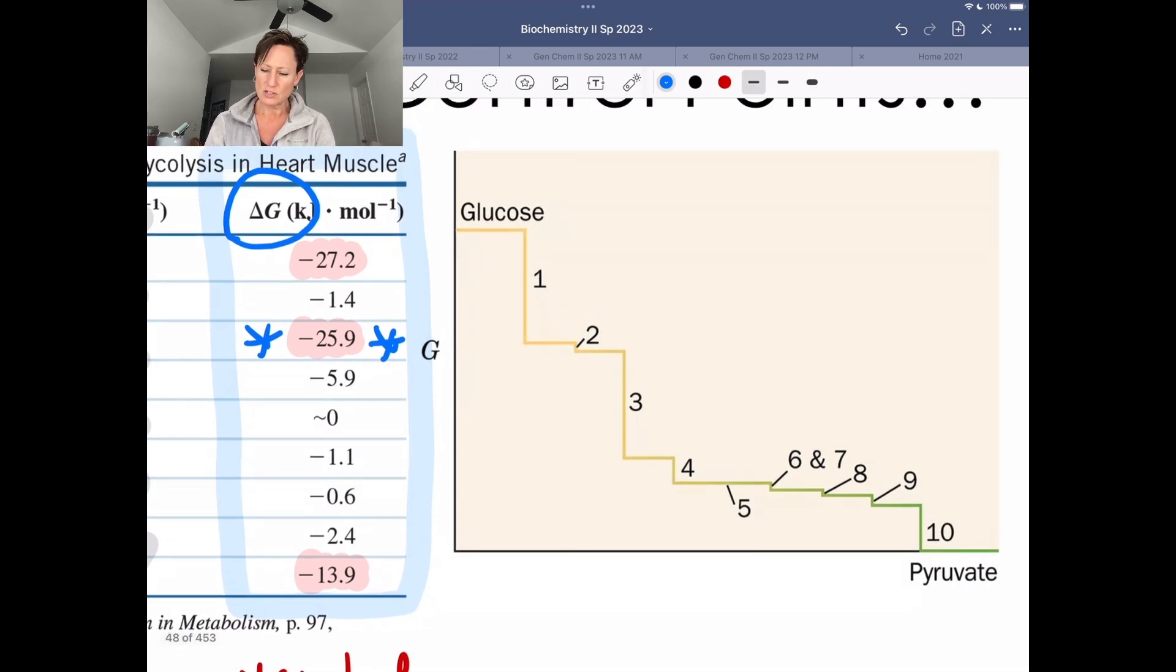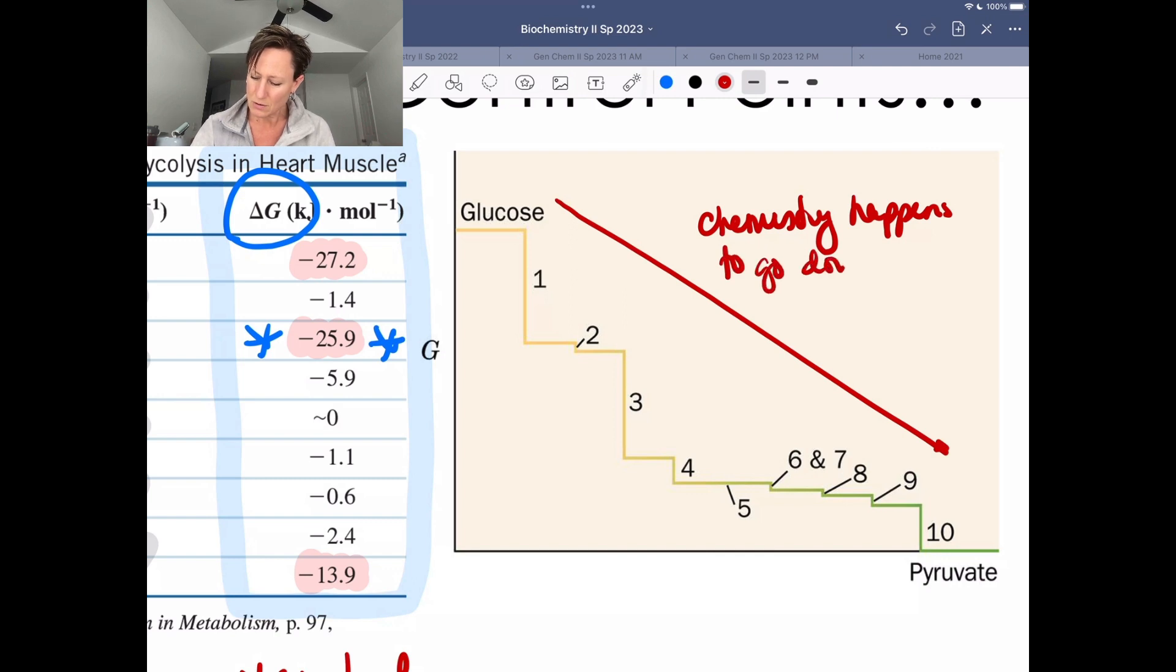It plots free energy as a function sort of of reaction progress here. And what we see is an important hallmark of things that happen in chemistry. What we see is chemistry happens to go downhill. So as we go from glucose to pyruvate, we see chemistry happening to go downhill.